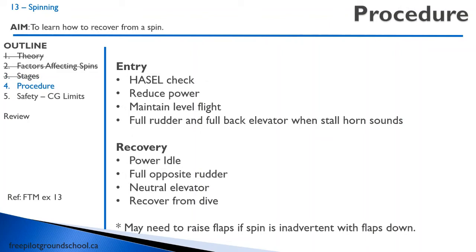The procedure to enter a spin starts with a HAZEL check. Regarding security — make sure your cargo is secure, really take a look behind you and ensure everything is tied down or under the cargo net. Because this is an aerobatic maneuver, you may induce negative G, and if something heavy like survival equipment or a fire extinguisher is not secure and flies up and hits you in the back of the head, it's going to be a bad day. To enter: reduce power to idle, maintain level flight by continuing to pull the controls back, and at the stall apply full rudder and full back elevator. You may need to be a bit aggressive at 50 or 55 knots — just full rudder, full back elevator suddenly. Go over this with your instructor as it depends on the aircraft type.